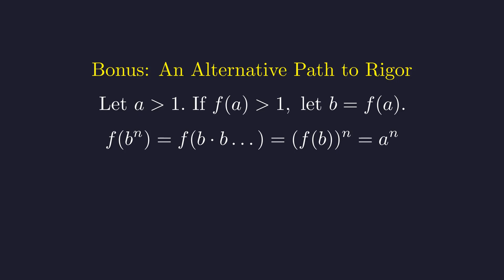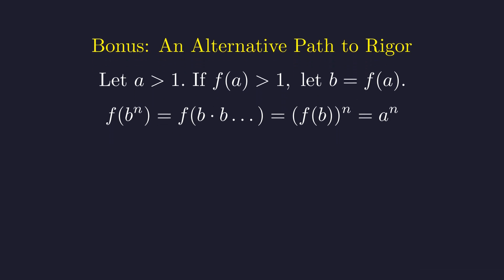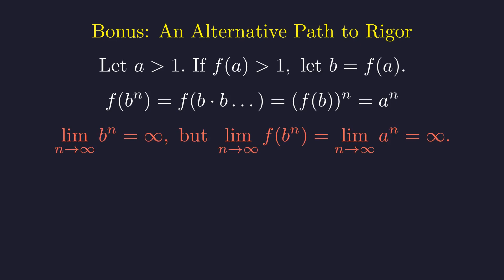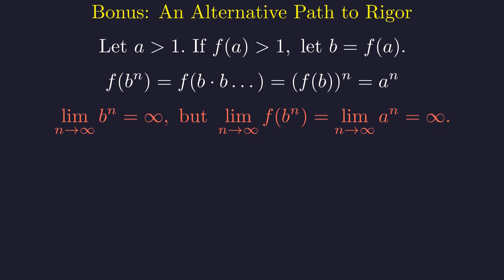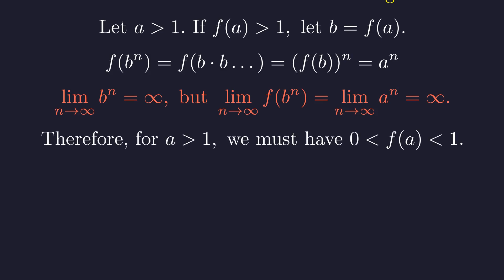Since f is multiplicative, f of b to the n equals f of b to the power of n. Since f of b equals f of f of a, which is a, this becomes a to the power of n. As n approaches infinity, b to the n goes to infinity. But f of b to the n also goes to infinity, because a is greater than 1. This contradicts our condition that the limit of the function must be 0. This means our assumption was wrong. If a is greater than 1, then f of a must be between 0 and 1.